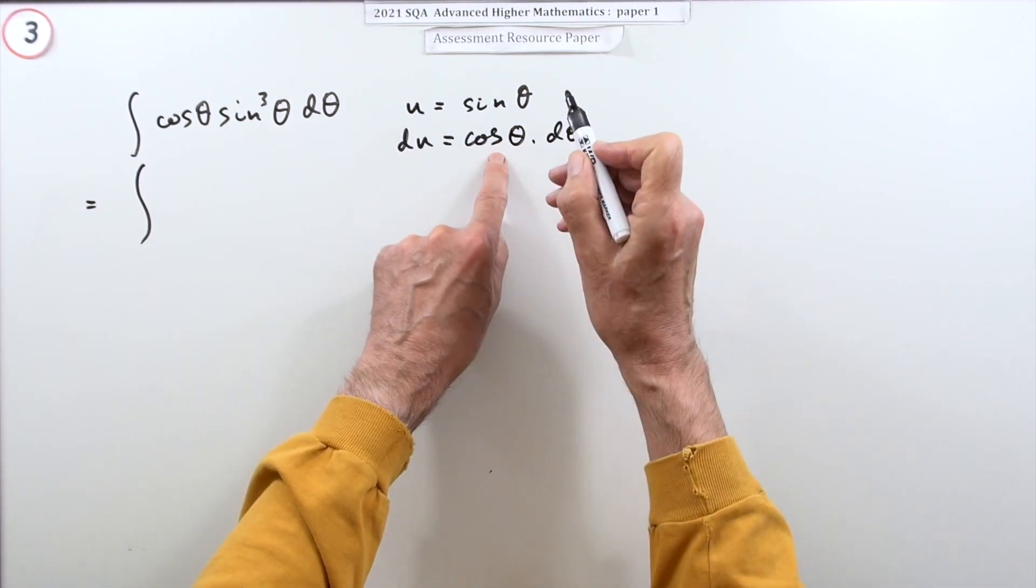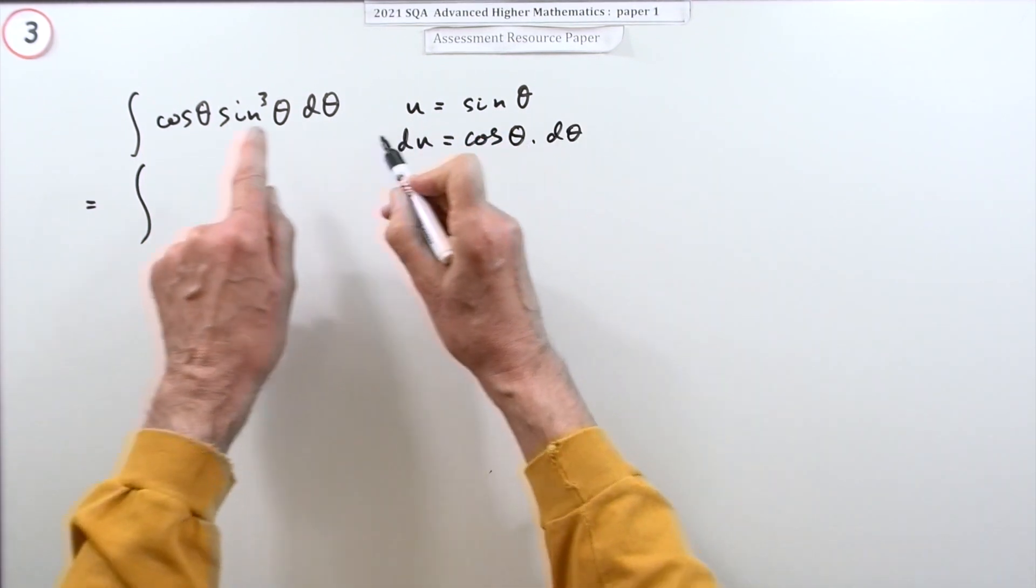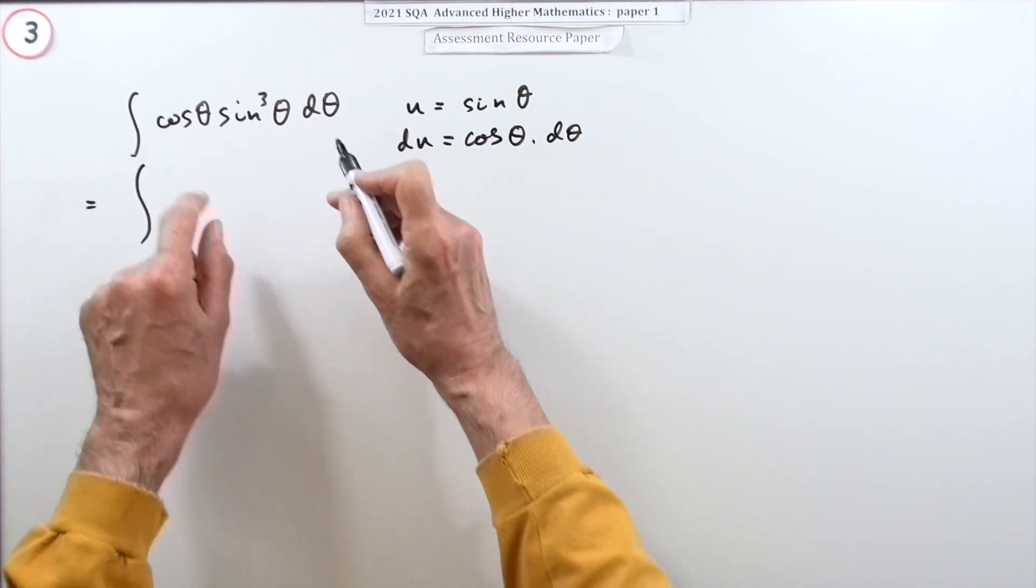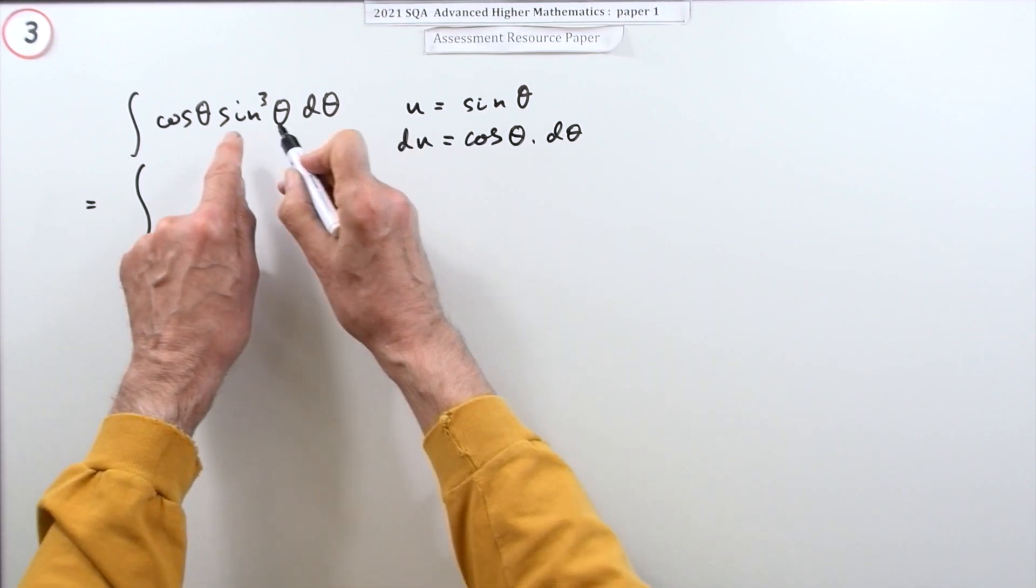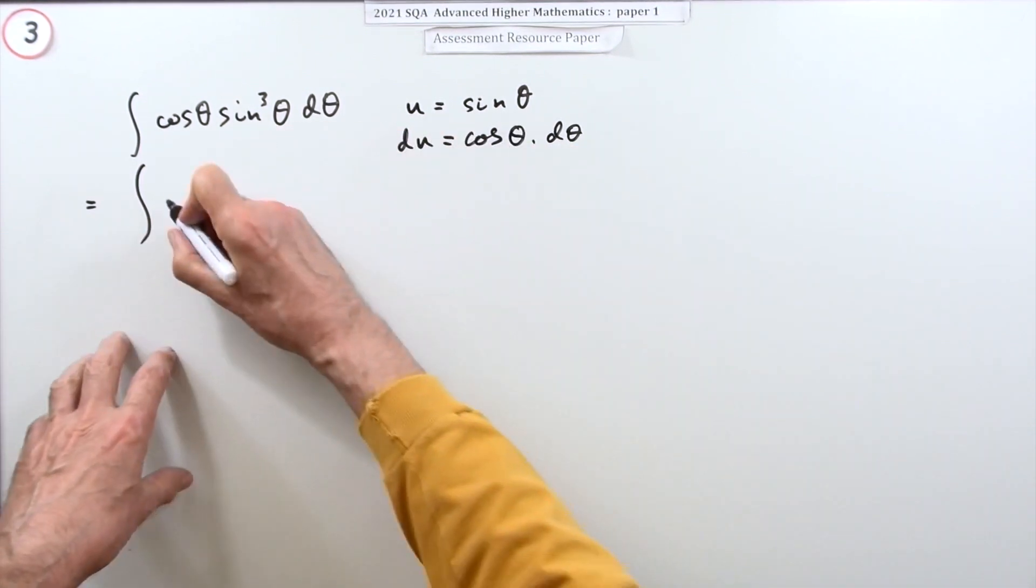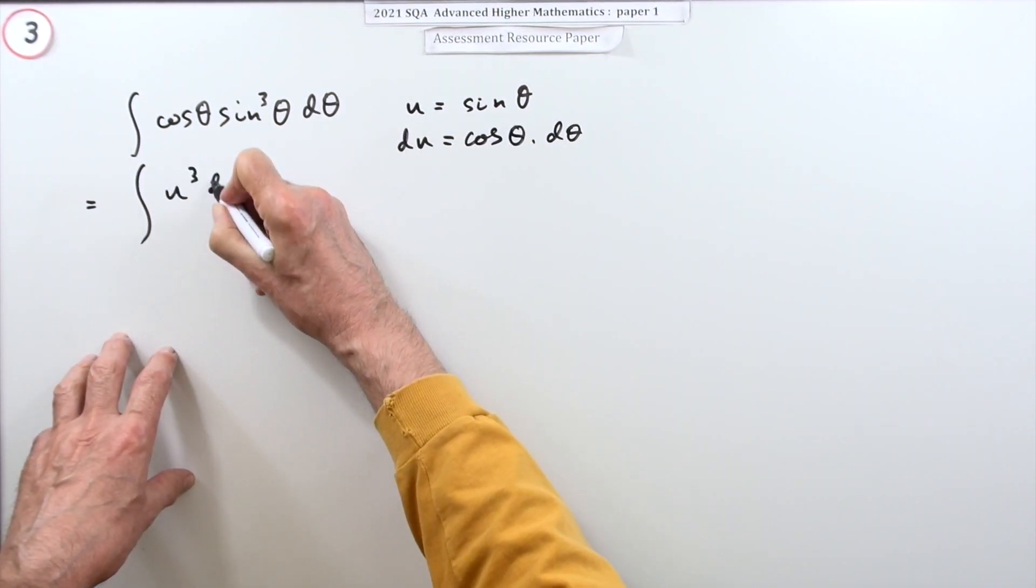Look for a cos theta and a d theta. Well, I've got both of those, so this is quite a clean replacement. That can be replaced by du, and that can be replaced by u cubed. So I can go straight to u cubed du.